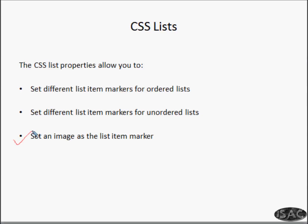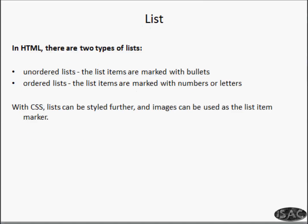We can also use an image as a list item marker. Instead of a circle, we can have a square, a disc, or an image. In HTML, there are two types of lists: unordered lists where items are marked with bullets, and ordered lists where items are marked with numbers, letters like ABCD, Roman numerals, and so on. With CSS, lists can be styled further and images can be used as list item markers.